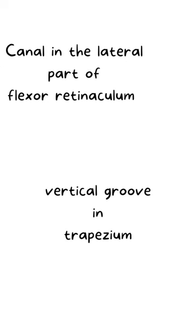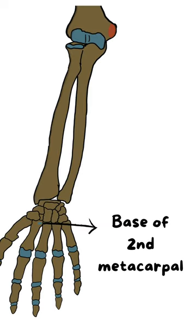In the mid forearm its muscle belly is replaced by a tendon, and it passes through a canal in the lateral part of the flexor retinaculum at the wrist, and through a vertical groove in the trapezium, goes and attaches at the base of the second metacarpal.